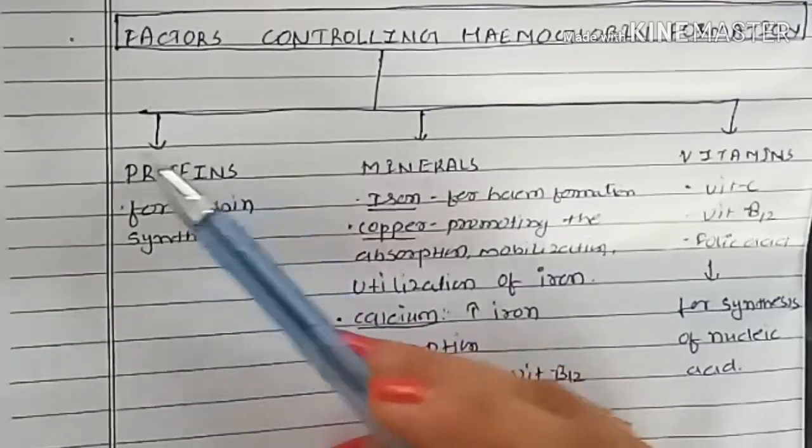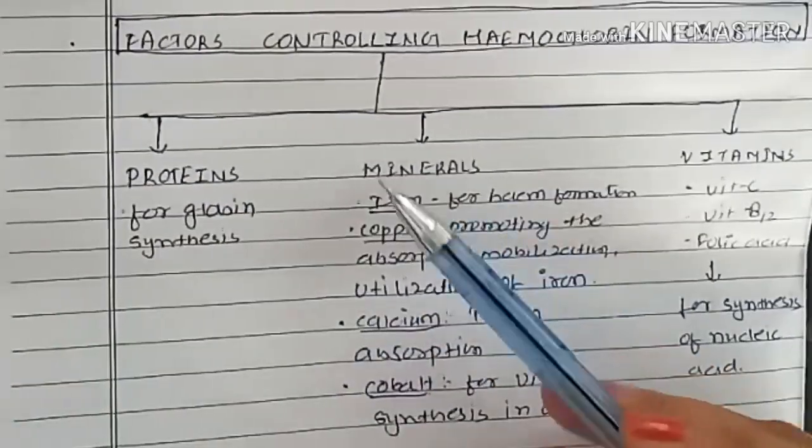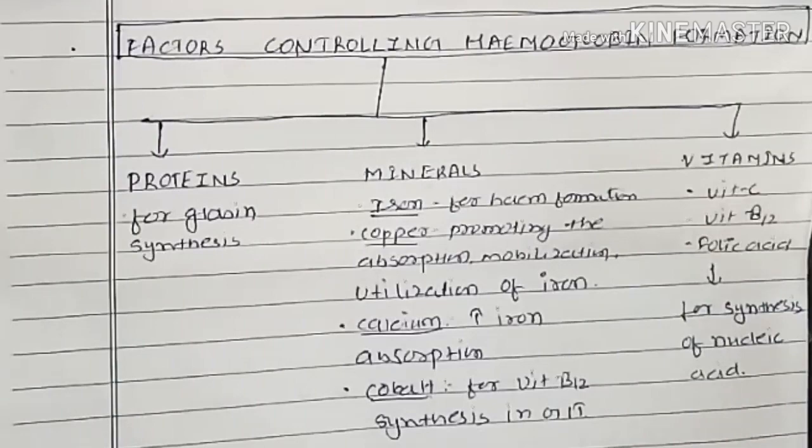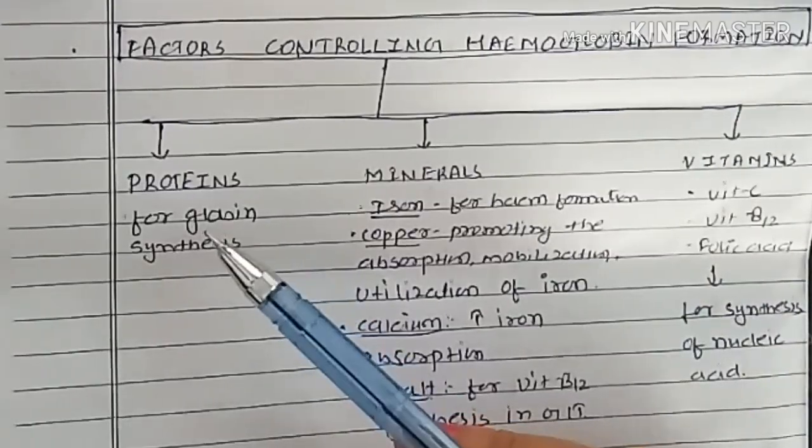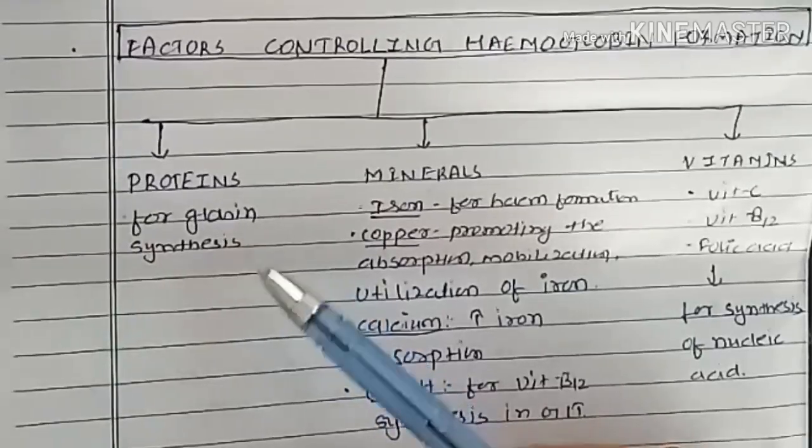Different factors like proteins, minerals, and vitamins control hemoglobin formation. Proteins are required for globin synthesis.